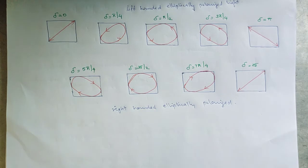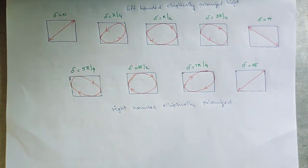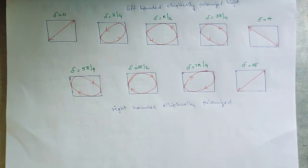In the next class, we will discuss how we can produce plane polarized light, elliptically polarized light, and circularly polarized light.